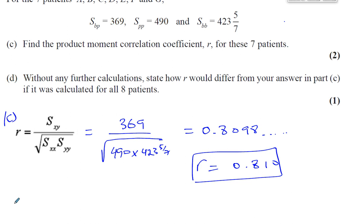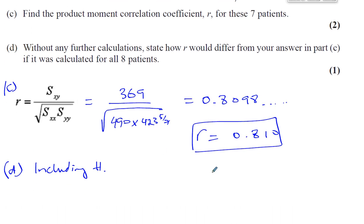Now part D, it tells us, without further calculations, state how R would differ from your answer in part C if it was calculated for all eight patients. That means you're including H, which is an outlier. If you include H, the data is not so close to a straight line. It will cause the value of R to become less close to 1. And remember, if you have a scale here, minus 1 and 0 and 1. When R is minus 1, it's perfect negative correlation. When you have R as 0, there's no correlation.